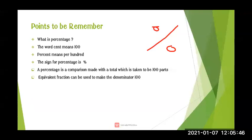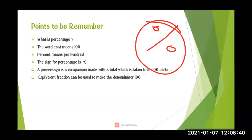A percentage is a comparison made with a total which is taken to be hundred parts. Percentage is a comparison between the total which has been taken from the hundred parts. Equivalent fractions can be used to make the denominator hundred. Equivalent fractions means fractions which have equal values. So here percentage means it is coming out of hundred. The symbol for percentage is this one, and it will be taken from hundred.